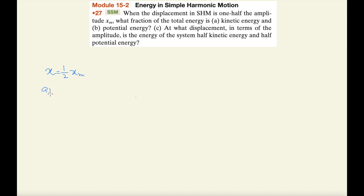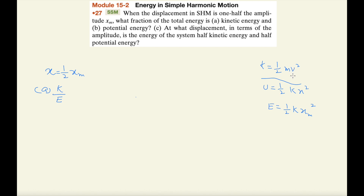In part A, we have to find kinetic energy divided by total energy — this is the fraction or ratio K to total energy. We know that kinetic energy K is equal to one half MV squared, potential energy U is equal to one half K X squared, and total energy E is equal to one half K XM squared. In kinetic energy there is mass and velocity, but in potential energy we are given only K and X, and in total energy K and XM.